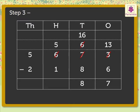Step 3. Subtract the hundreds. That is, 5 minus 1 is equal to 4. Step 4. Subtract the thousands. That is, 5 minus 2 is equal to 3.